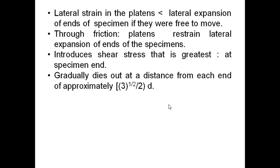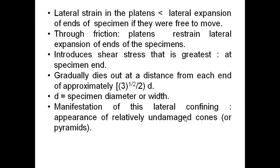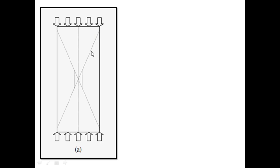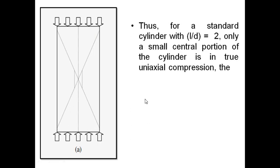This introduces shear stress that is greatest at the specimen end. This shear stress gradually dies out at a distance from each end of approximately √3/2 × D, where D is the specimen diameter in case of cylinder or width in case of cube. The manifestation of this lateral confining is the appearance of relatively undamaged cones or pyramids, which is shown in figure 3A. This is the cone which is undamaged. Thus, for a standard cylinder with L/D ratio equal to 2, only a small central portion of the cylinder, shown here, is in true uniaxial compression, the remainder being in a state of triaxial stress. Only a small central portion is in pure compression state.